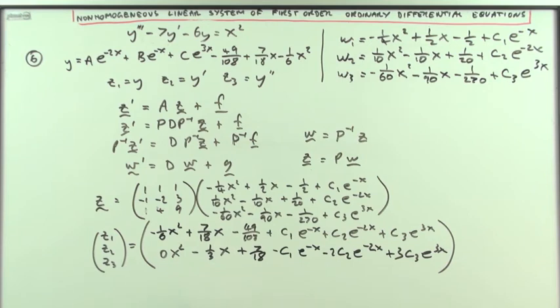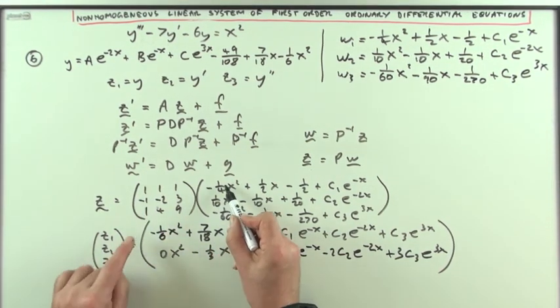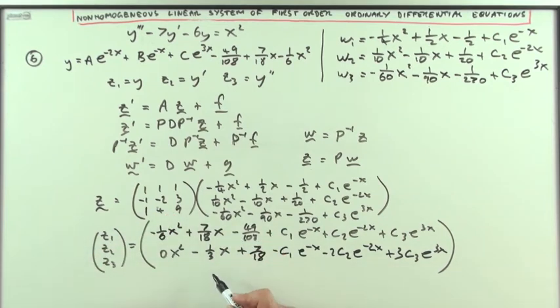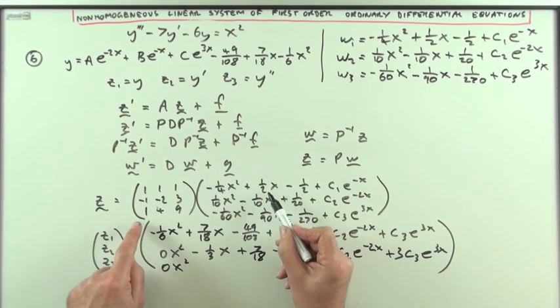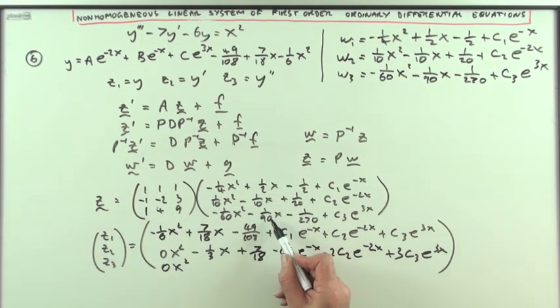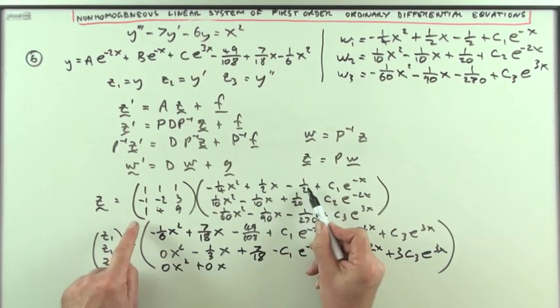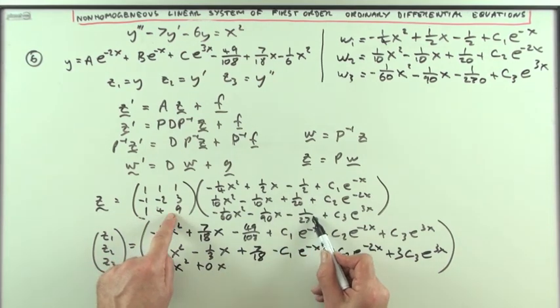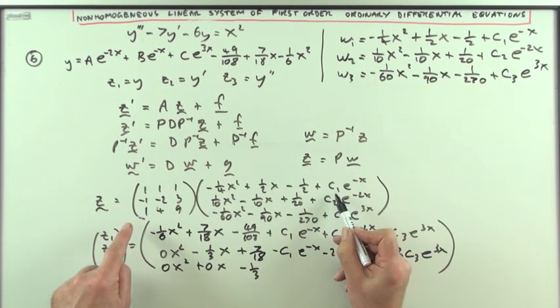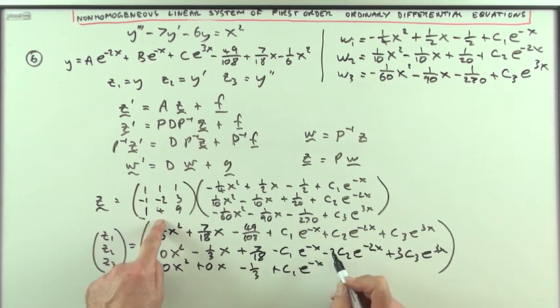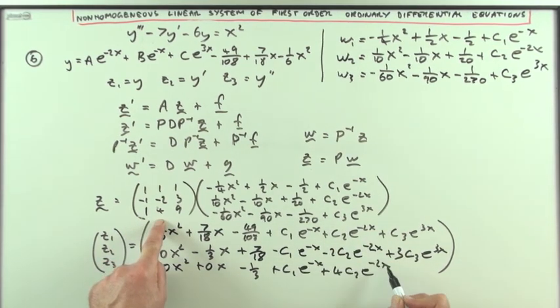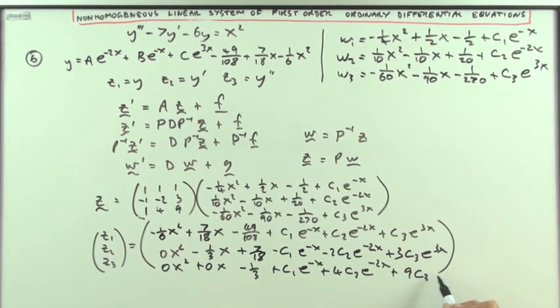z₃ same again: it's going to be one of them, four of them, and nine of them. When you carry that out, that comes to zero for the x squared. So if you work this out: a half and minus four tenths and minus nine ninetyths, that comes to zero. Lots of x, and then negative a half plus four twentieths minus nine over 270 comes to negative a third. And this part would be plus c₁e⁻ˣ plus 4c₂e⁻²ˣ and plus 9c₃e³ˣ.